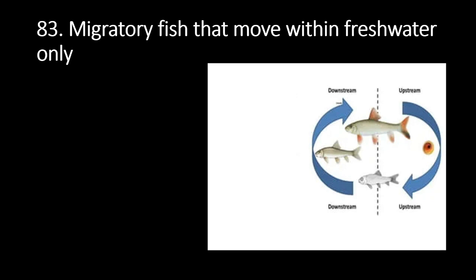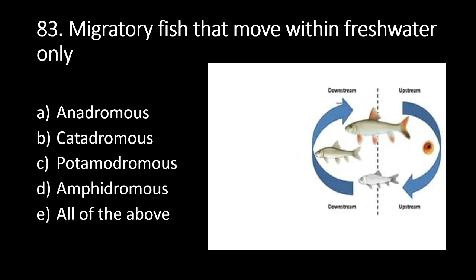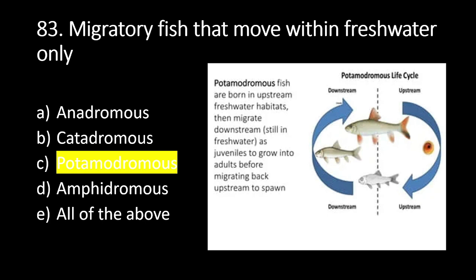Number 83: this refers to migratory fish that move within fresh water only. A. Anadromous, B. Catadromous, C. Potamodromous, D. Amphidromous, E. All of the above. The answer is C. Potamodromous. Potamodromous fish are born in upstream freshwater habitats then migrate downstream, still in fresh water, as juveniles to grow into adults before migrating back upstream to spawn.